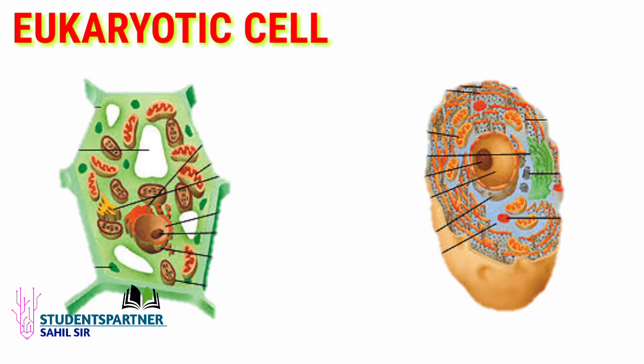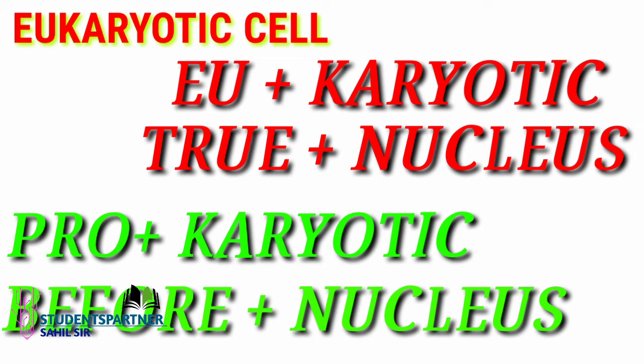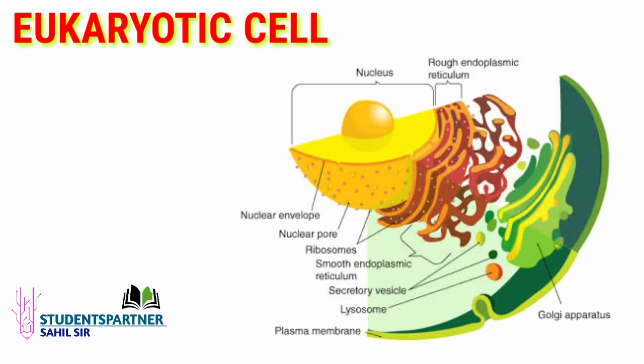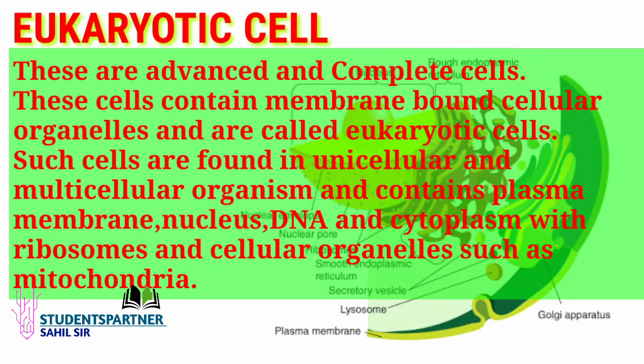Now let's do eukaryotic cells. The name eukaryotic is made of two words. Prokaryotic has 'pro' meaning before, while eukaryotic refers to true nucleus. Eukaryotic cells are advanced and complete cells. These cells contain membrane-bound cellular organelles and are therefore called eukaryotic cells.